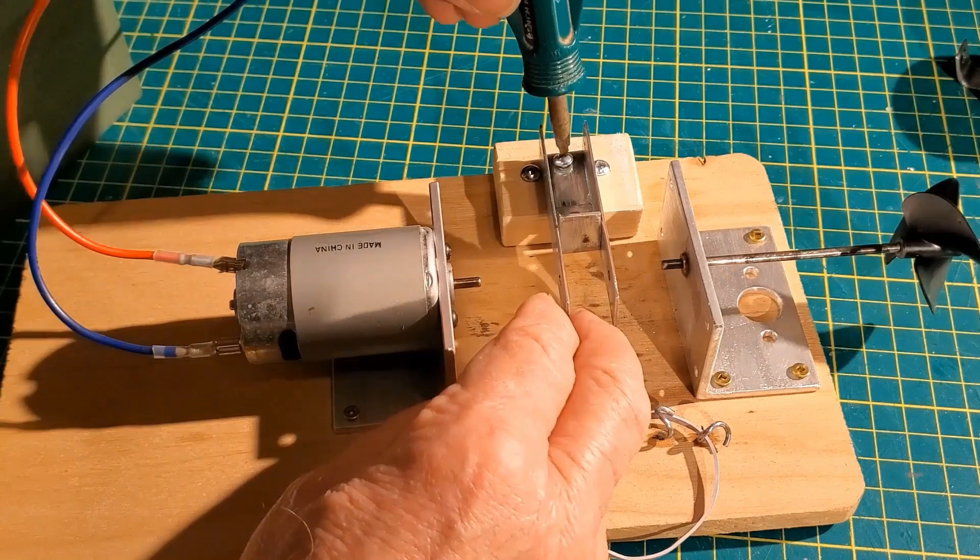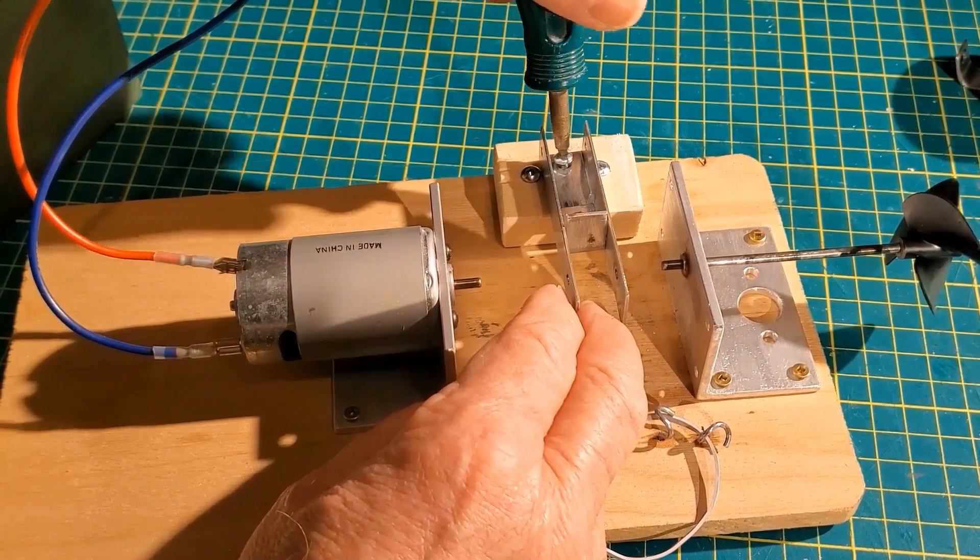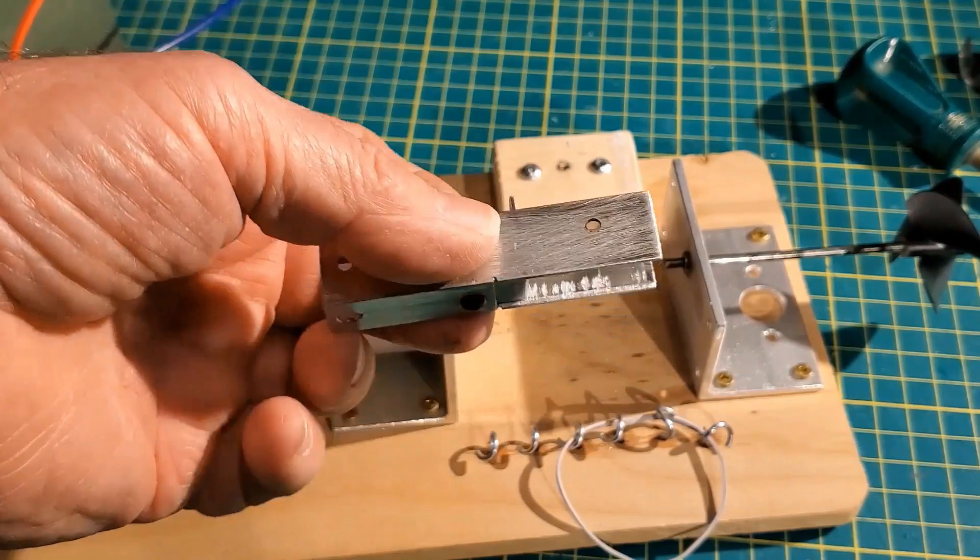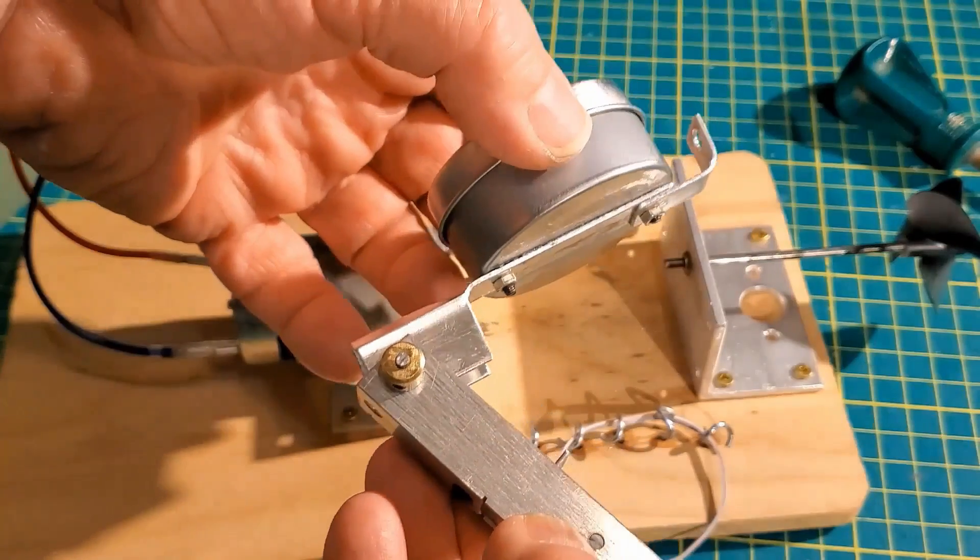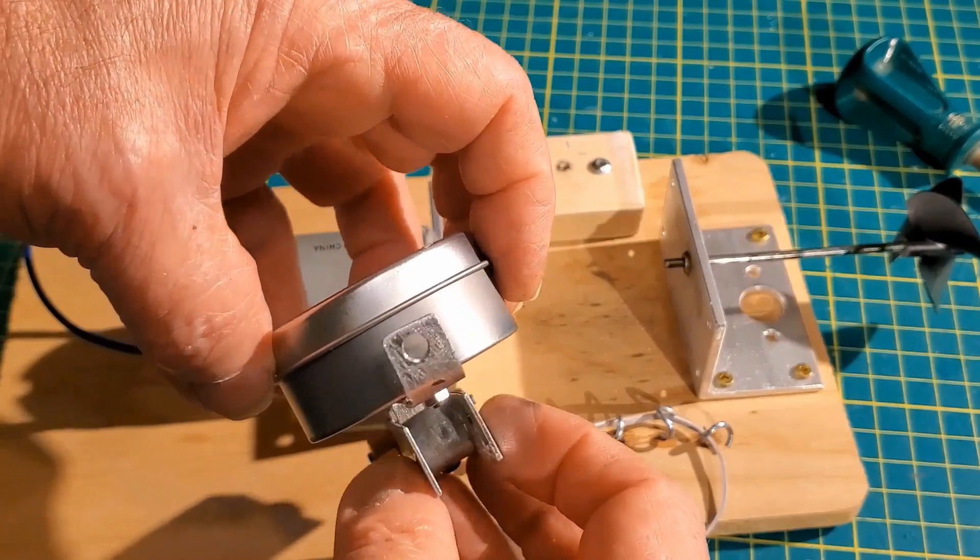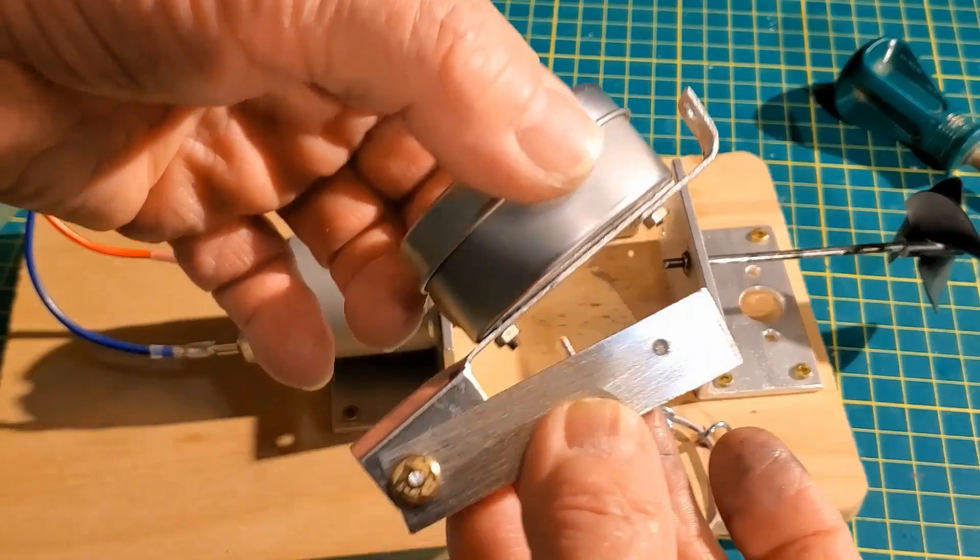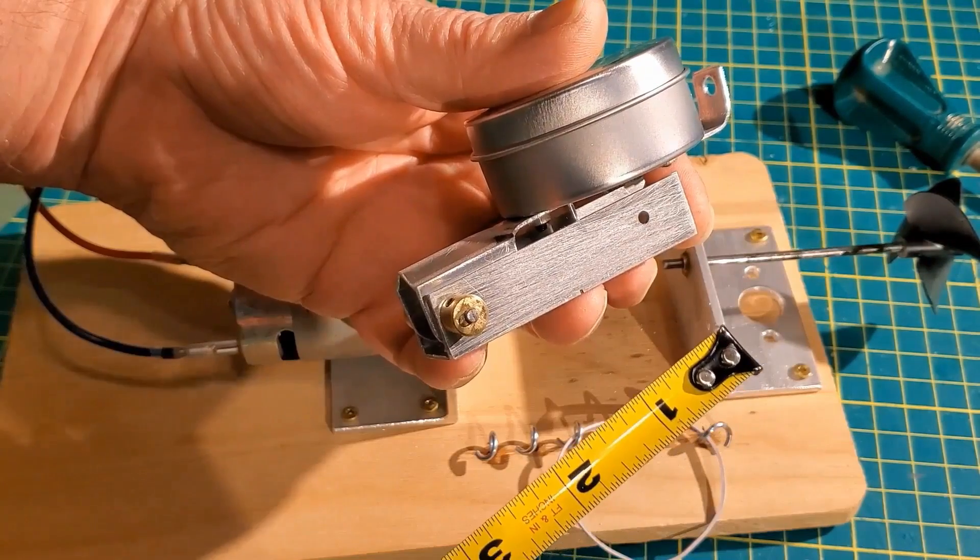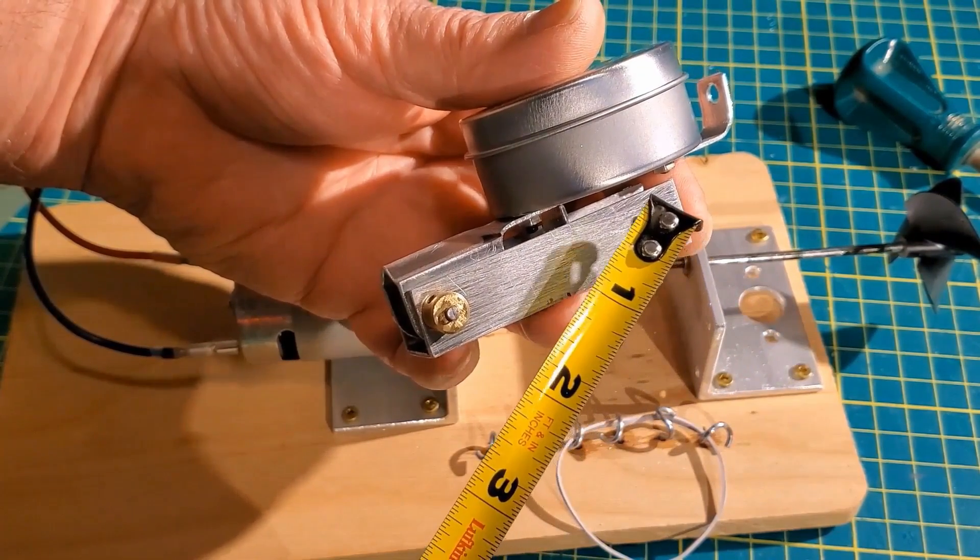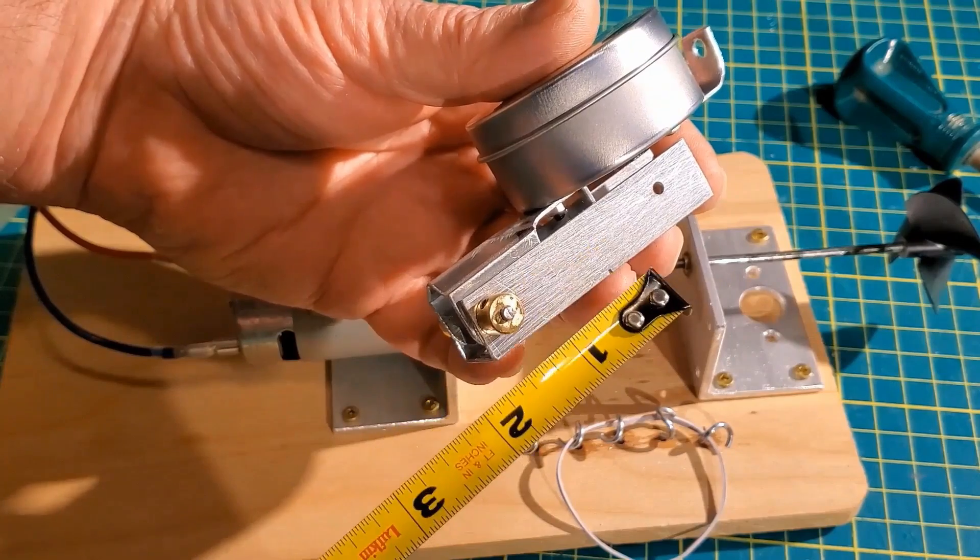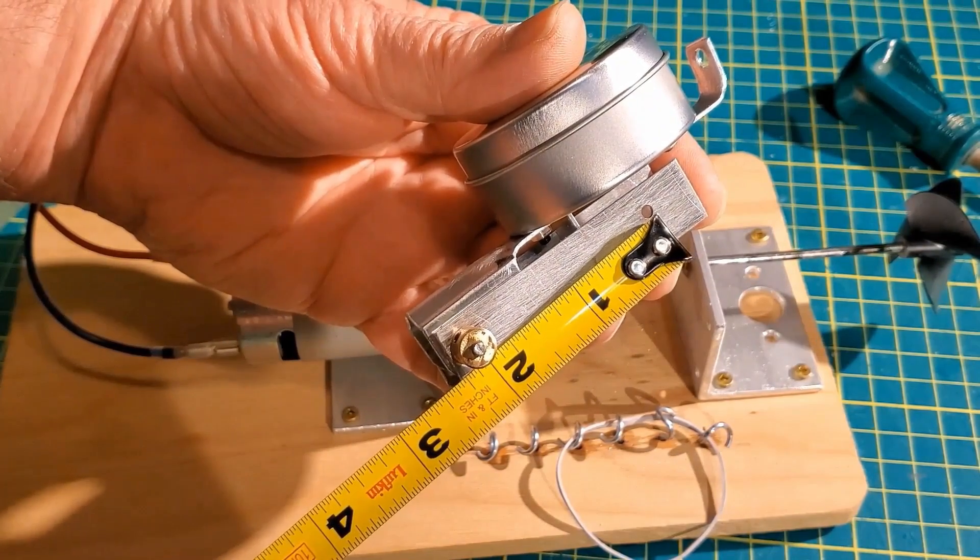And the bottom arm is unscrewed. The distance between the shaft hole here and the hinge hole is approximately two inches.